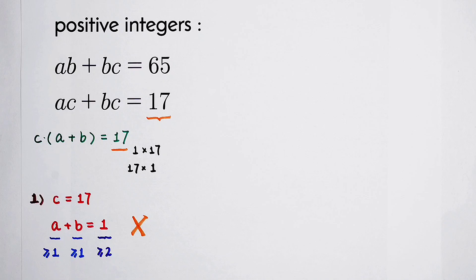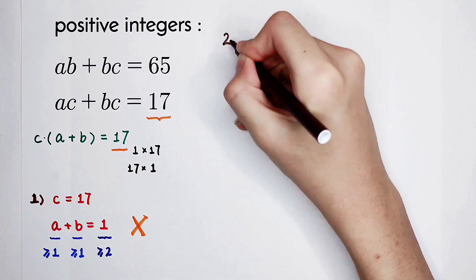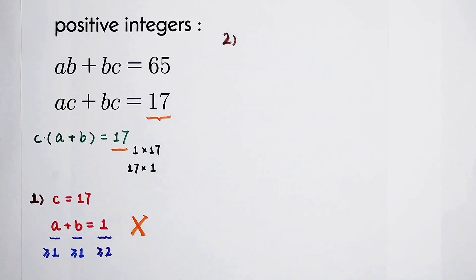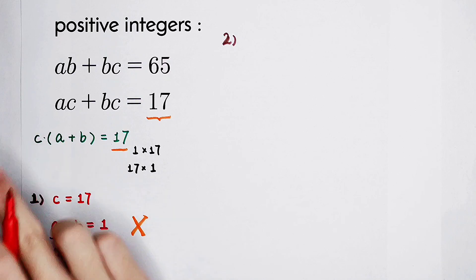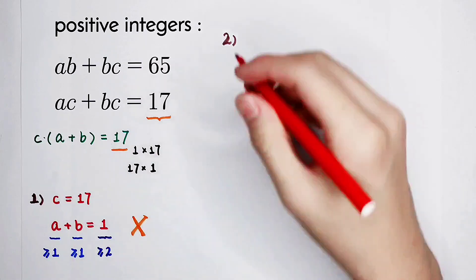The first case has been deserted, and the second case. Of course, it is much more complicated than the first case. Let's have a look what we have. C is 1, a plus b is 17.